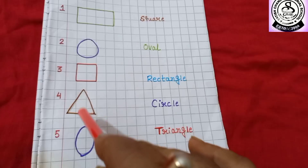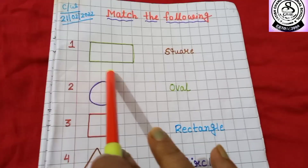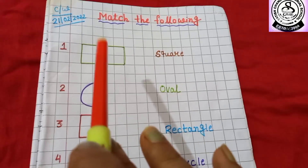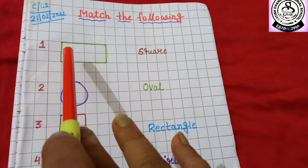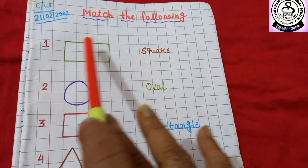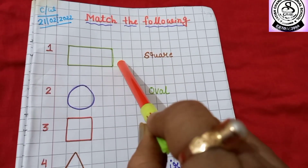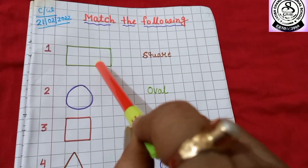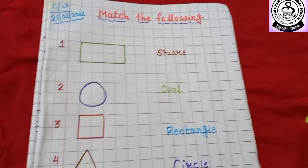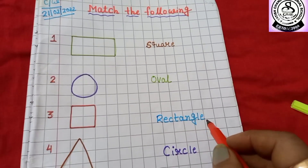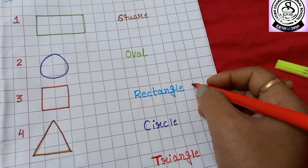Here I have drawn some shapes, so you have to match it. First, number 1 — I have drawn a rectangle. Rectangle has how many corners? 1, 2, 3, and 4 corners. And how many sides? 1, 2, 3, and 4 sides. And opposite sides are equal. Here you can see opposite sides are equal. So here I have written rectangle, and besides the rectangle you have to write number 1.